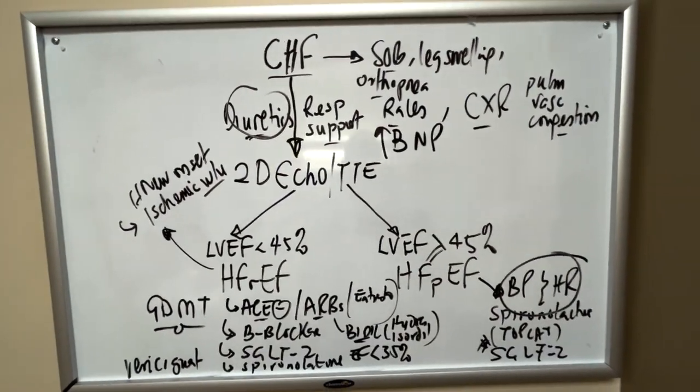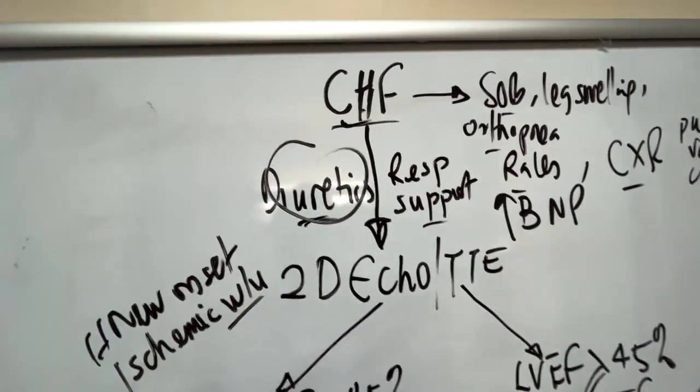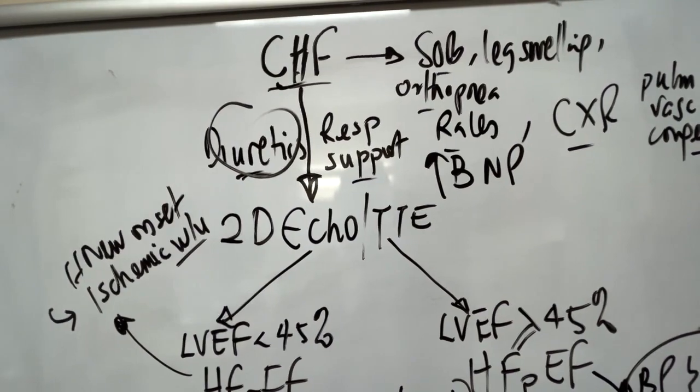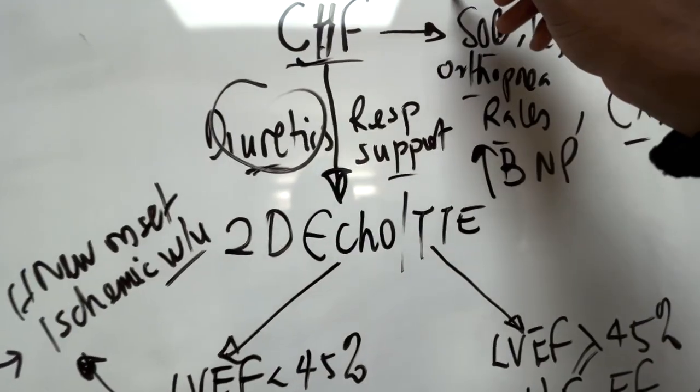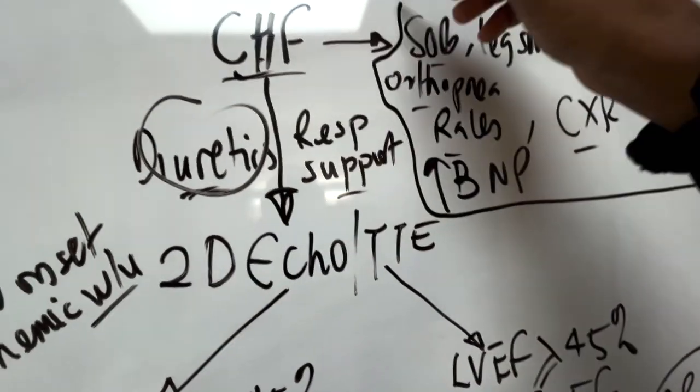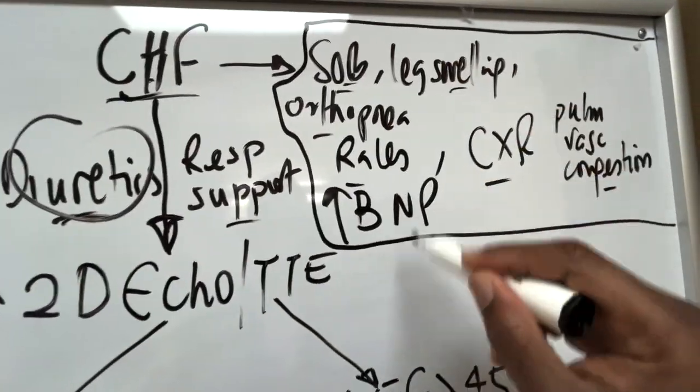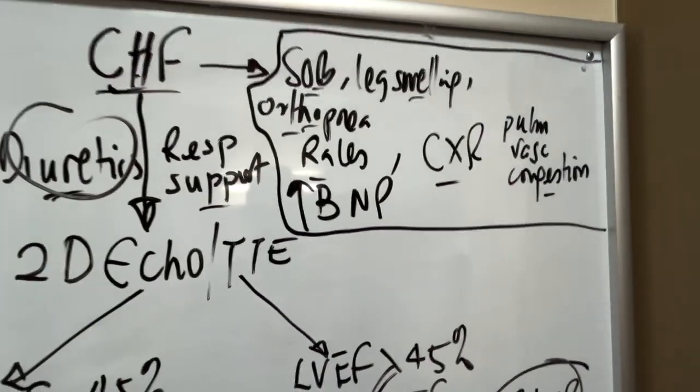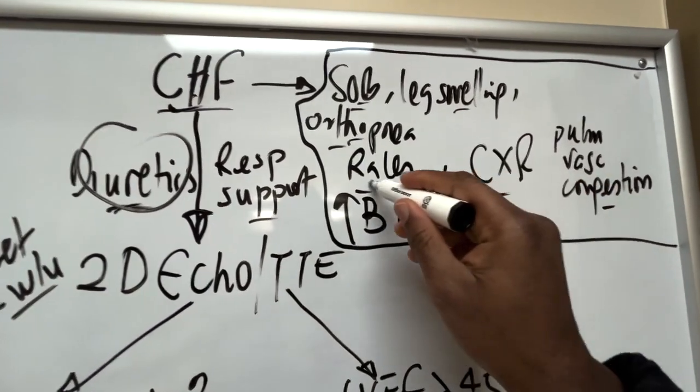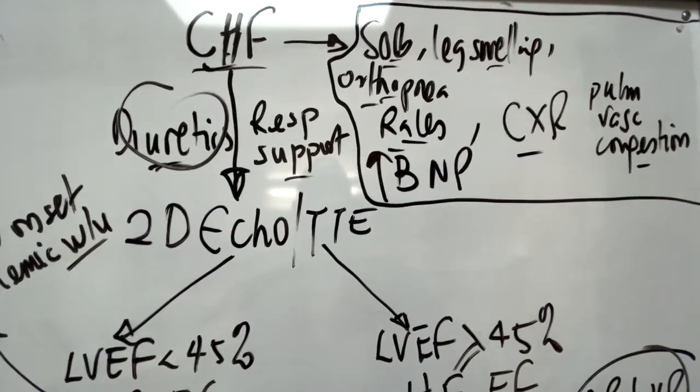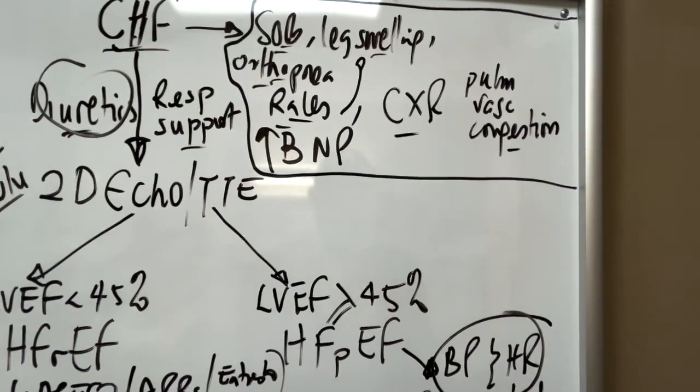The first thing you want to establish is the diagnosis. How do you identify CHF? You start with the initial information from history and workup: shortness of breath, leg swelling, orthopnea which is more consistent with heart failure. Rails on exam, leg edema on exam.